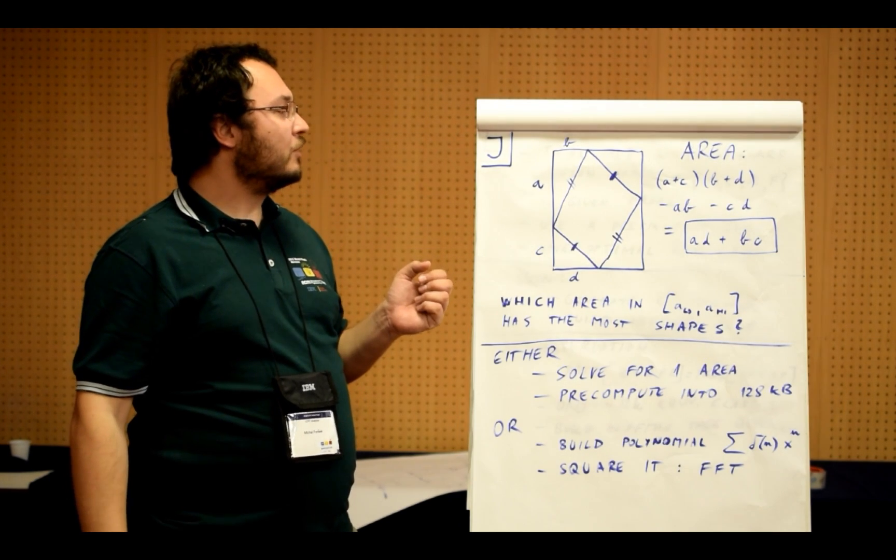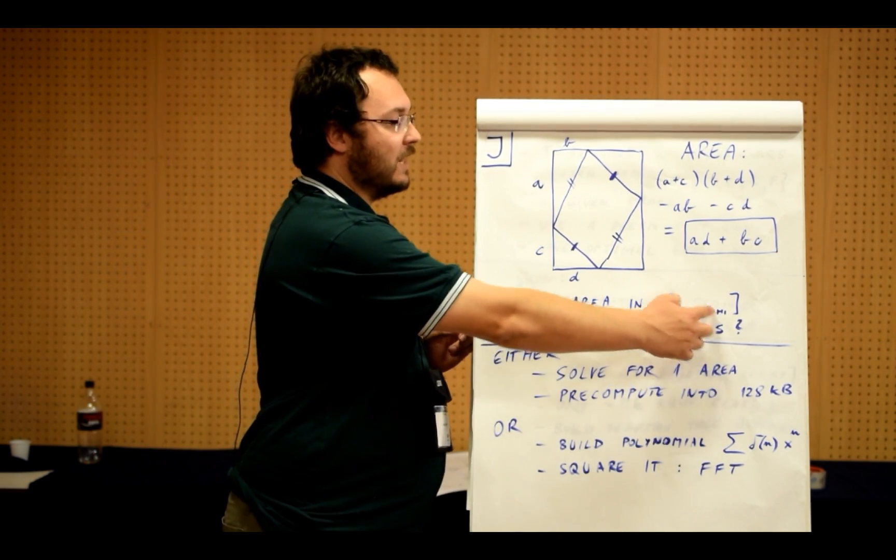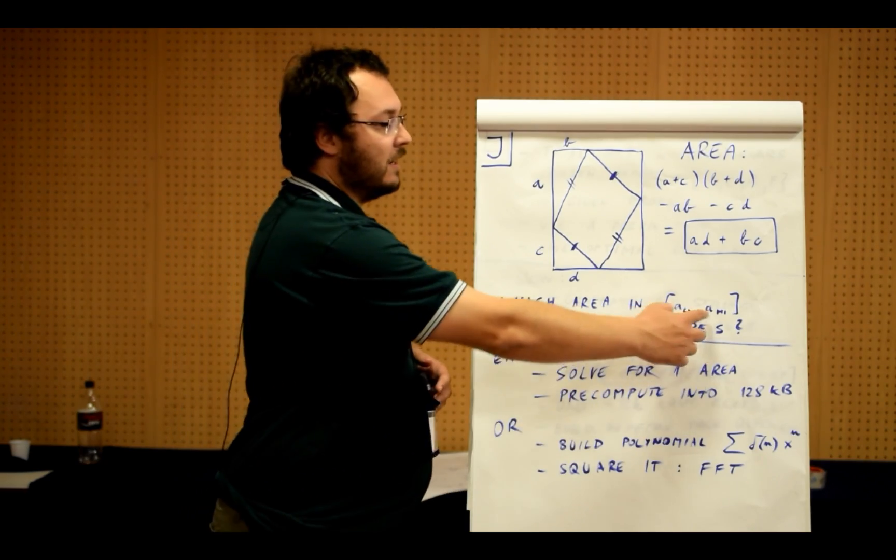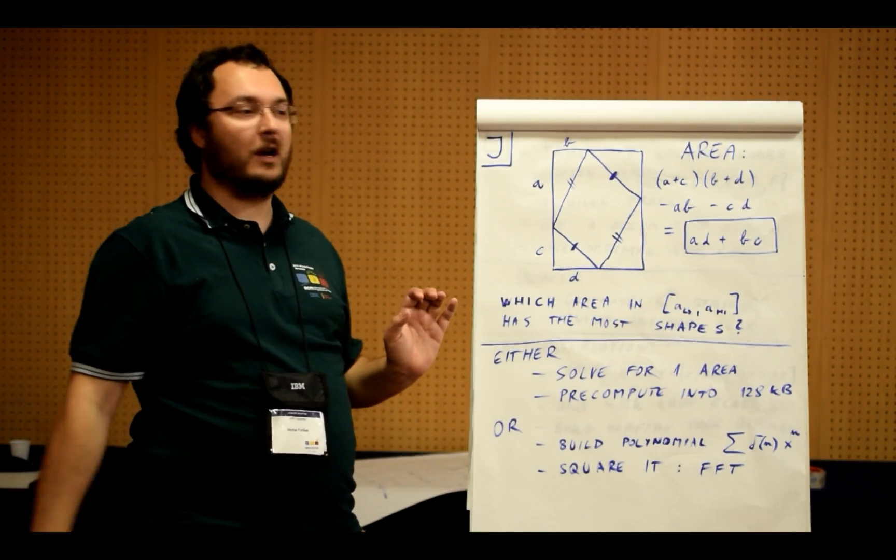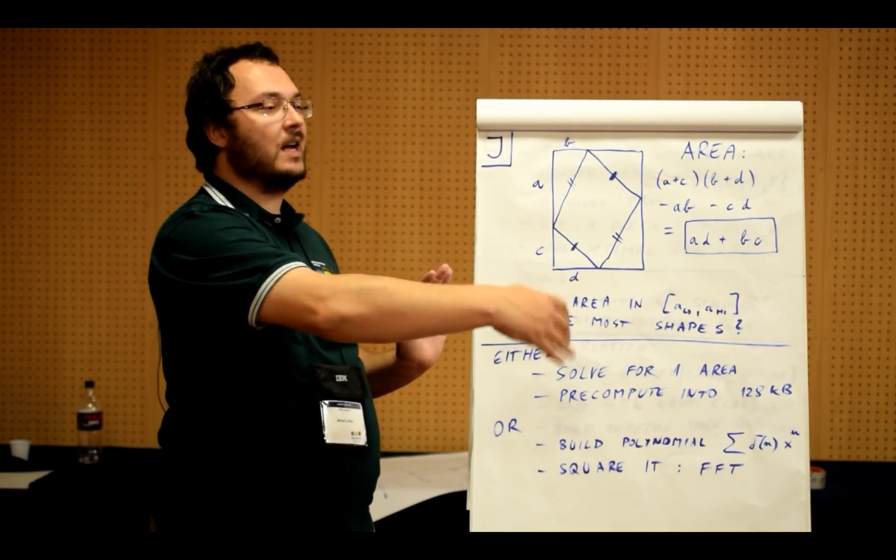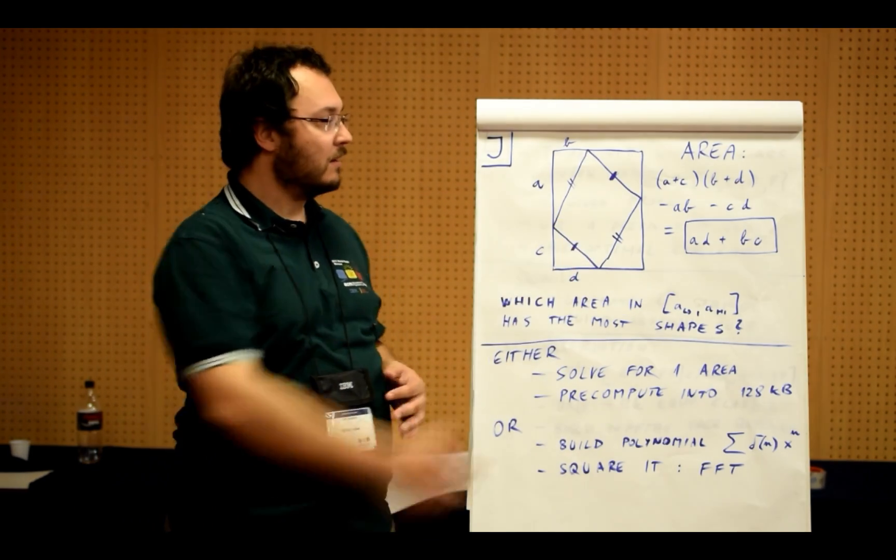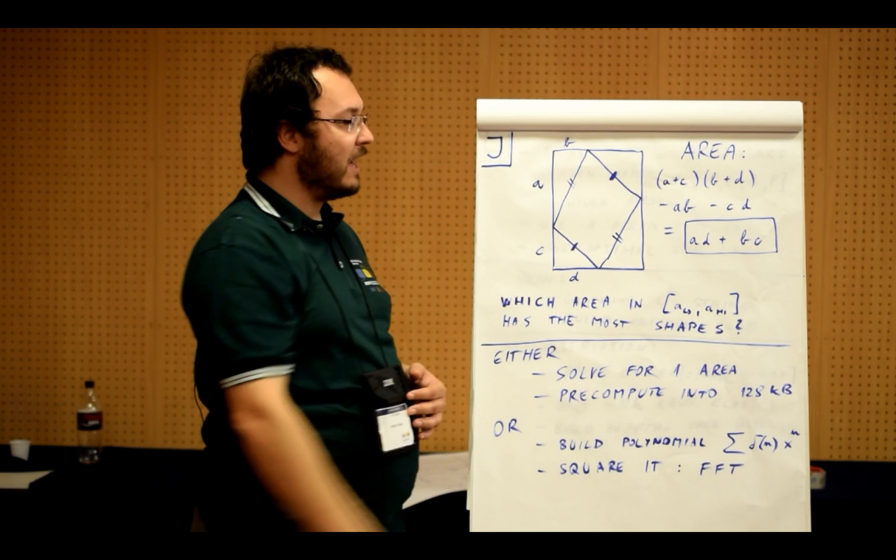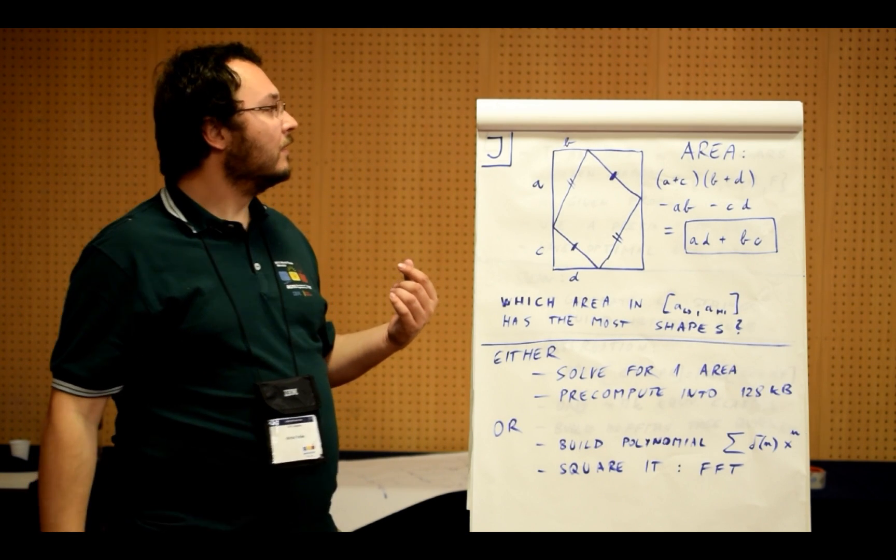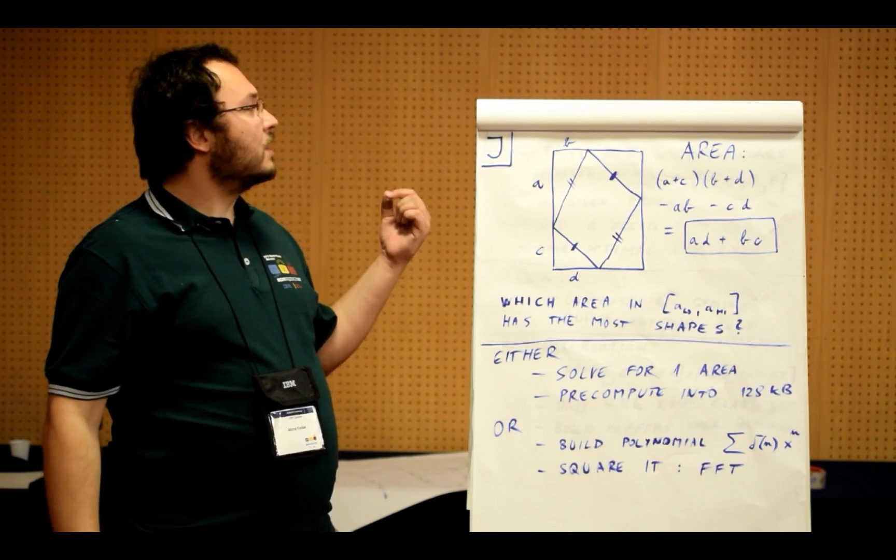Now we are interested in many different areas, so we are given as the input two numbers, a low and then high. They define an interval of areas. For each of these areas we are supposed to compute the number of different tiles of this shape with the given area and take the maximum out of these.